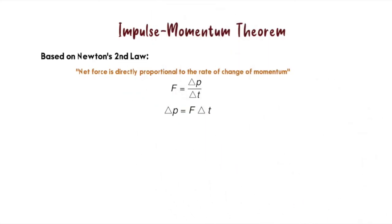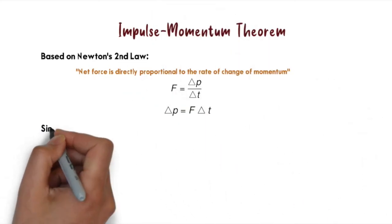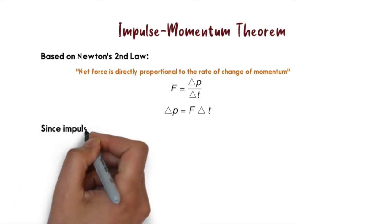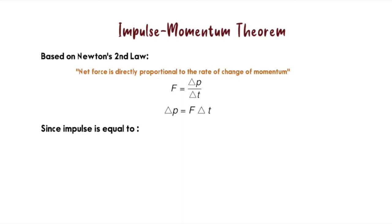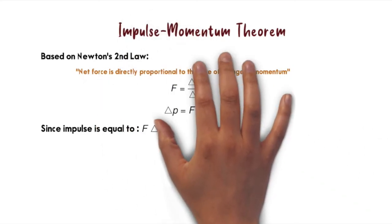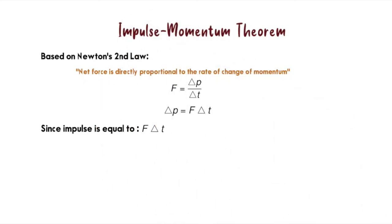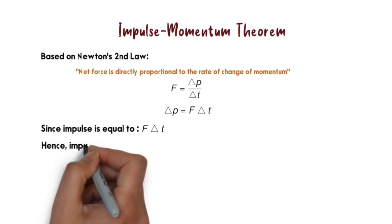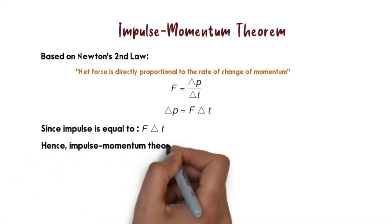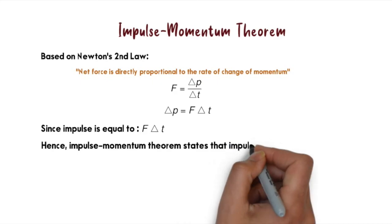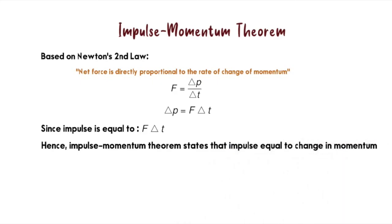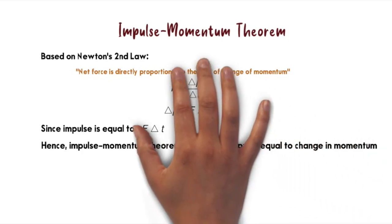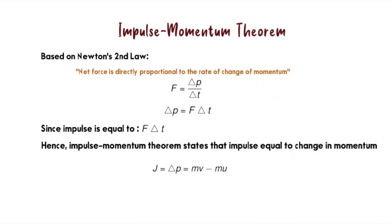We rearrange the equation to get F∆t, and if you still remember, F∆t refers to impulse. So we can conclude that the impulse-momentum theorem states that impulse equals the change in momentum: J = ∆p = mv - mu. We have two equations that represent impulse.